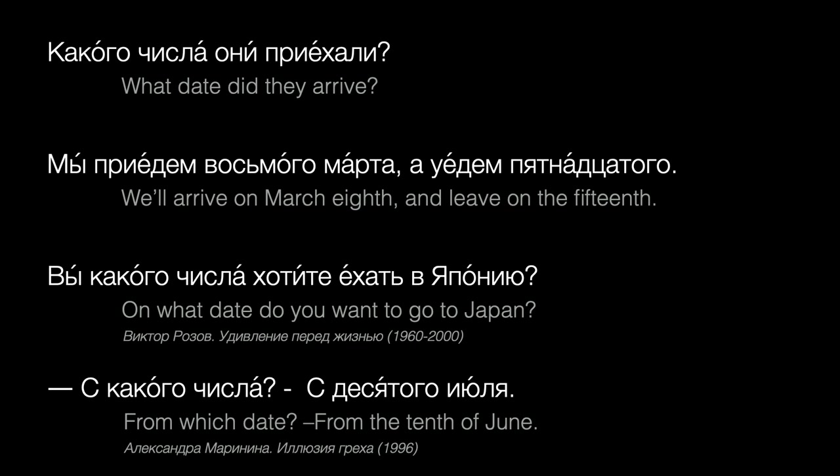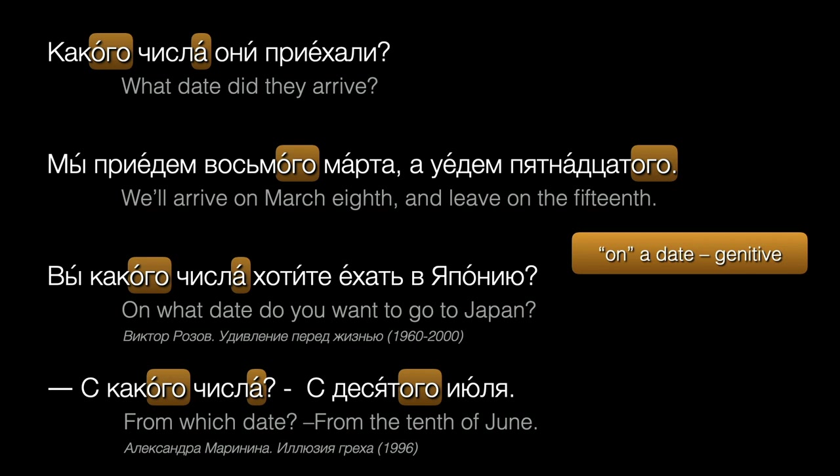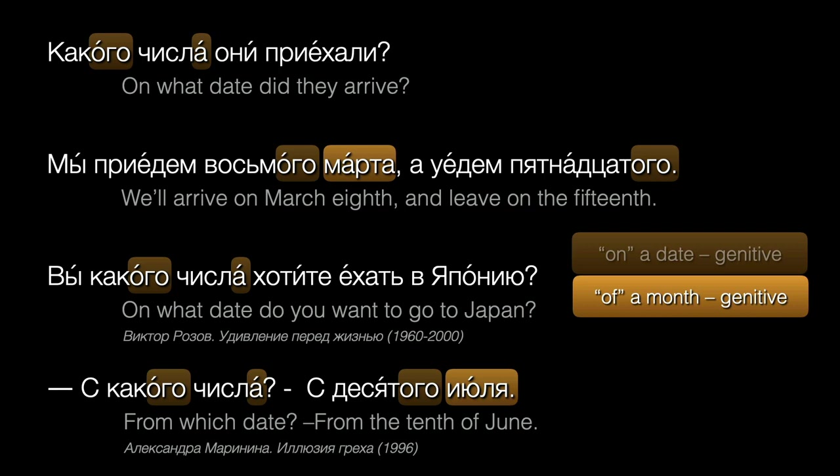To talk about on which date something happens, we just use the genitive: восьмого, пятнадцатого, десятого. And if we mention the month, again that month has the genitive ending too: марта, июля.